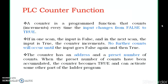Key facts about counter function: a counter counts every increment when the input changes from false to true. If in one scan the input is false and in the next scan it is true, the counter increments. No further count occurs until the input goes false again and then true. Every counter has an address and a preset number. When the preset number of counts have been accumulated, the counter's done bit becomes true and it can activate the next part of the ladder diagram.